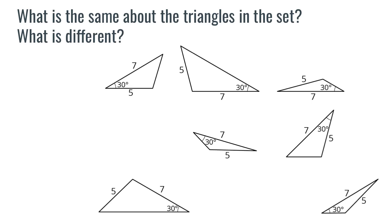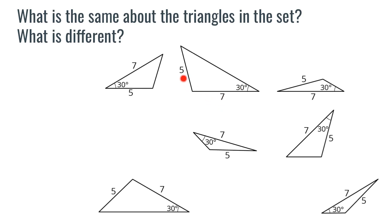These are the triangles created with those conditions. What is the same about the triangles in the set, and what is different? What's the same is that they all have the requirements: a side of seven, a side of five, and a 30-degree angle. What's different is the sizes, and also the position of that 30-degree angle relative to the sides — in one case it's in between, and in another it's connected to the seven but not to the five.